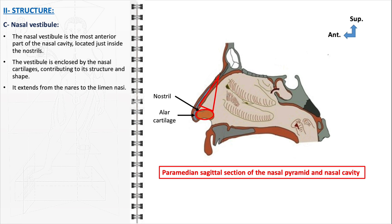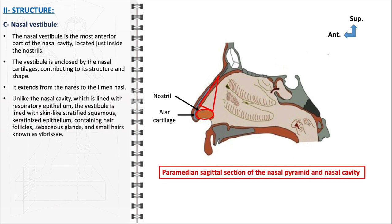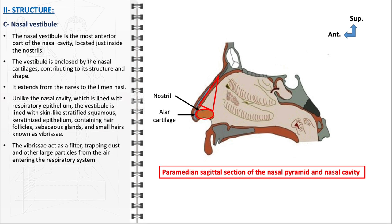The vestibule creates a smooth and efficient pathway for air to travel into the deeper parts of the respiratory system. Unlike the rest of the nasal cavity, which is lined with respiratory epithelium, the vestibule has a distinct lining of skin-like stratified squamous keratinized epithelium, equipped with hair follicles, sebaceous glands, and small hairs known as vibrissae. The vibrissae are particularly significant as they act as a natural filter, trapping dust, pollen, and other large particles from the air entering the respiratory system.